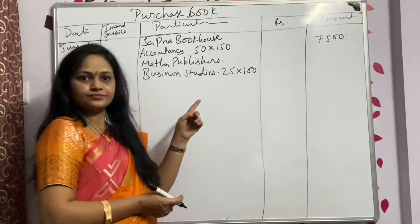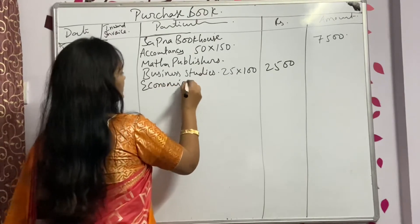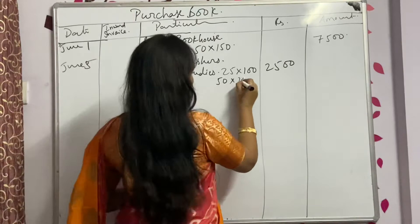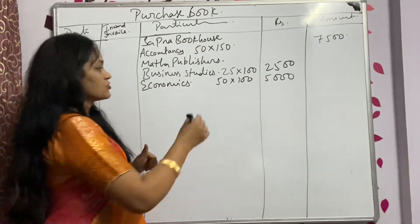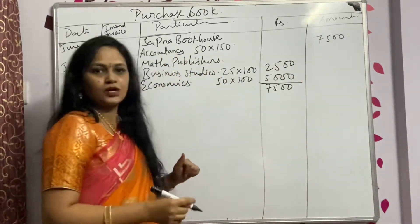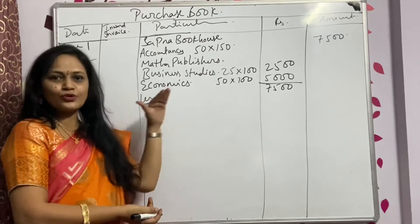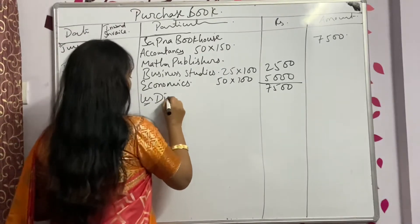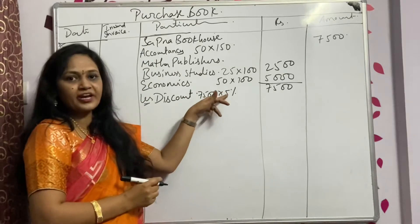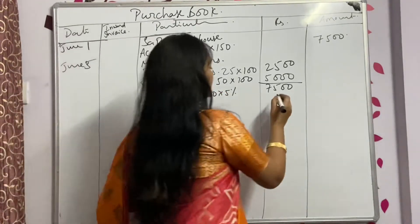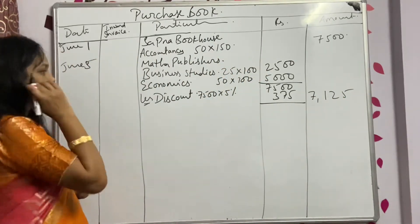There are more transactions, so write in the inner column: 2,500. Next, 50 economics books at ₹100 each = 50 into 100 = ₹5,000. There is also a 5% trade discount. Since discount reduces the price, we subtract it: 5% of 7,500 = ₹375. So 7,500 minus 375 = ₹7,125.